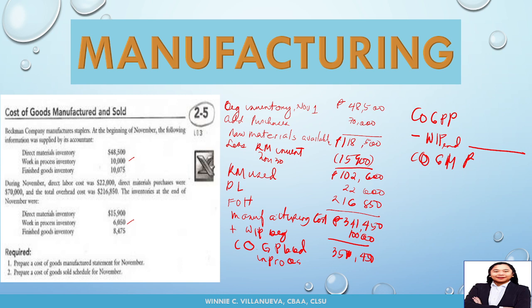Now you have to deduct the work in process ending. The work in process ending is 6,050. So the cost of goods manufactured is 345,400 pesos. The next thing computed is the cost of goods sold. The inventory figures — raw materials, work in process, and finished goods — are found in the statement of financial position.